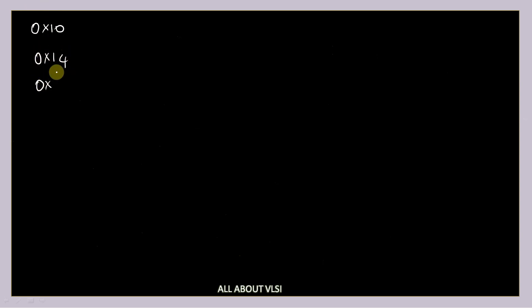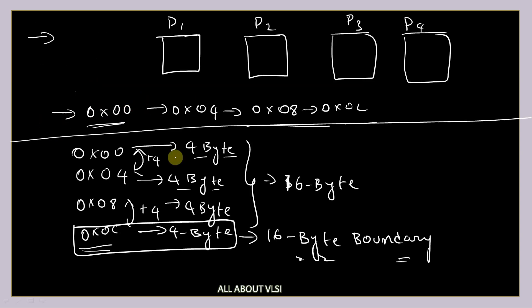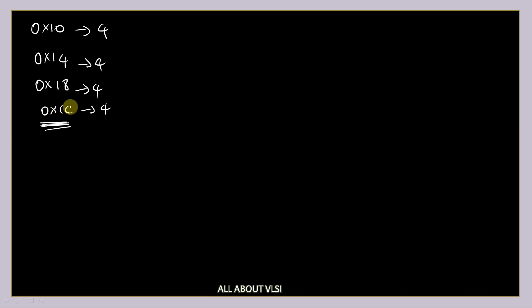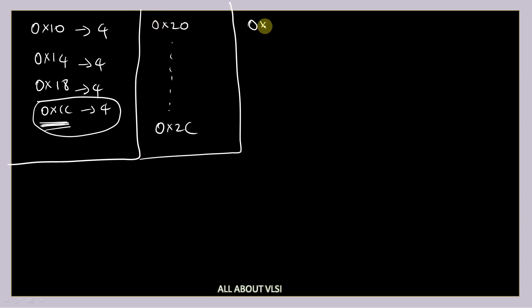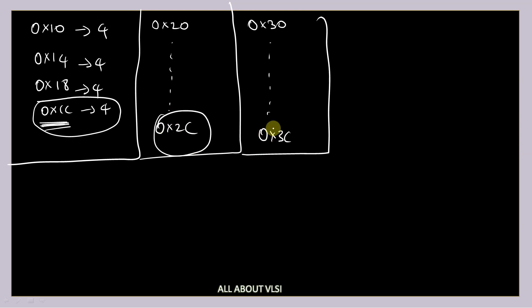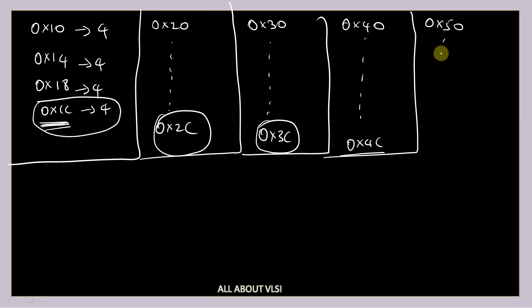After 0xC, the next address is 0x10, then 0x14, 0x18, and 0x1C. At 0x1C, another 16 bytes have been sent, so 0x1C is considered another 16-byte address boundary. Similarly, address ranges 0x20–0x2C, 0x30–0x3C, 0x40–0x4C, and so on each form 16-byte address ranges. The boundary address for each range is 0x2C, 0x3C, 0x4C respectively, and so on.